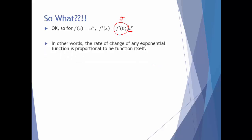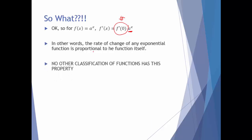What that means is that the rate of change, or the derivative, of any exponential function is proportional to the function itself. We don't know what that proportional number is — it could be twice the original function, it could be 1.5 times the original function. But the important thing is exponential functions are proportional to their derivatives.